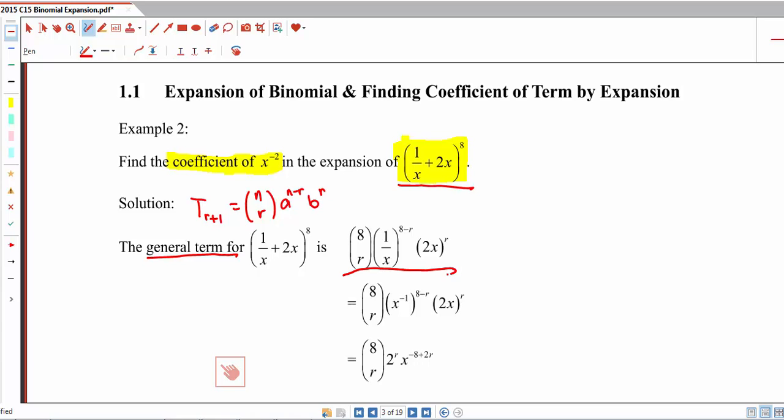let's write out what is the general term for 1 over x plus 2x to the power of 8. So this is the general term, but let's try to simplify this further. Let's combine the x terms together, where this is actually 2 to the power of r, x to the power of r multiplied by x to the power of negative 8 plus r. And that is how we combine the terms together.